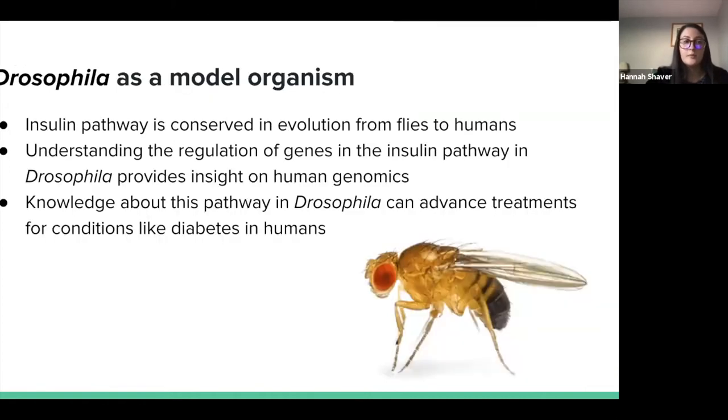Why are we using Drosophila flies to investigate this? The insulin pathway is conserved from flies to humans. Once we gain understanding of gene regulation in the insulin pathway of Drosophila, we can use it to provide insight on human genomics and lead to advancements for human conditions such as diabetes.